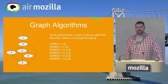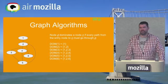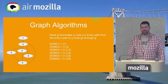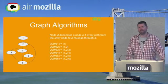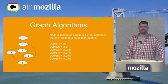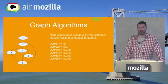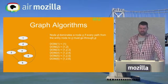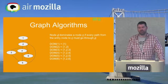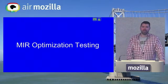My mentor Nico had a graph algorithm library that he'd implemented, and I ported it to use the compiler's internal data structures. This covers common graph algorithms useful in a compiler — for example, dominators. A basic block dominates another if control flow must pass through it. This is a general piece of information you want to know about code you're optimizing in many different compiler contexts.